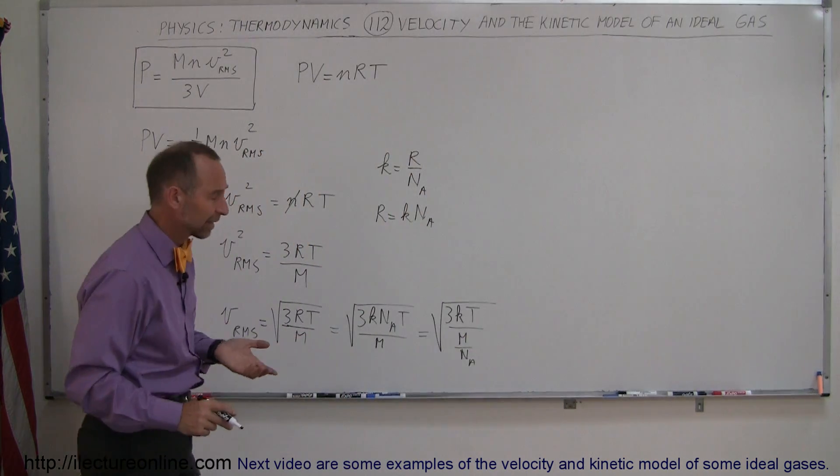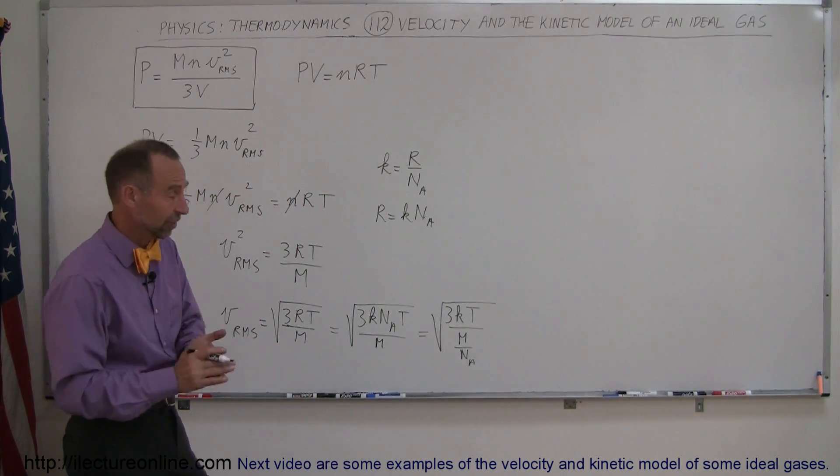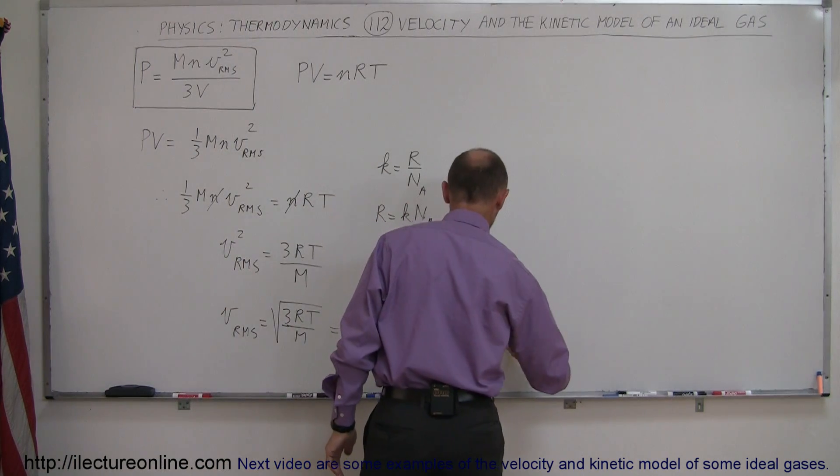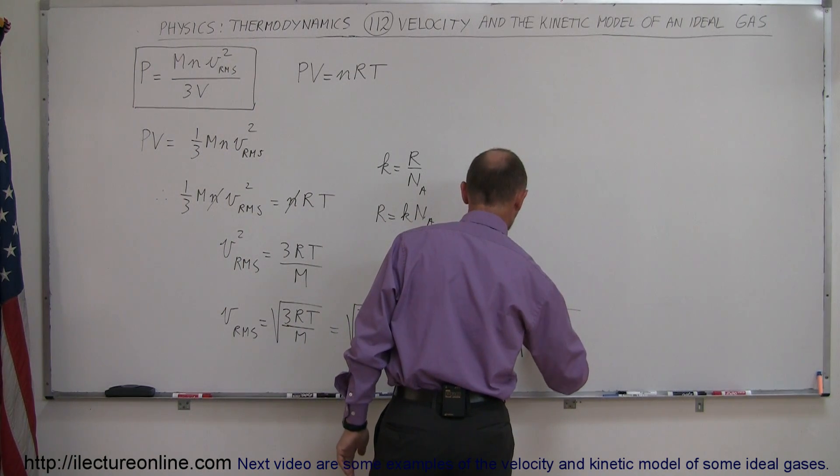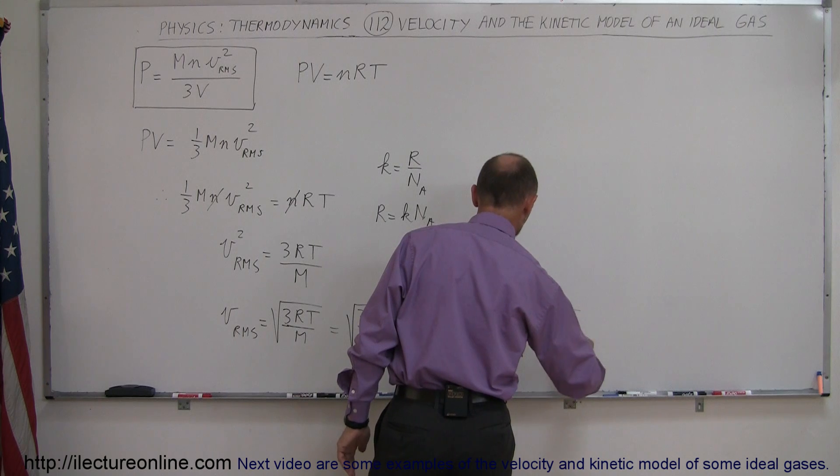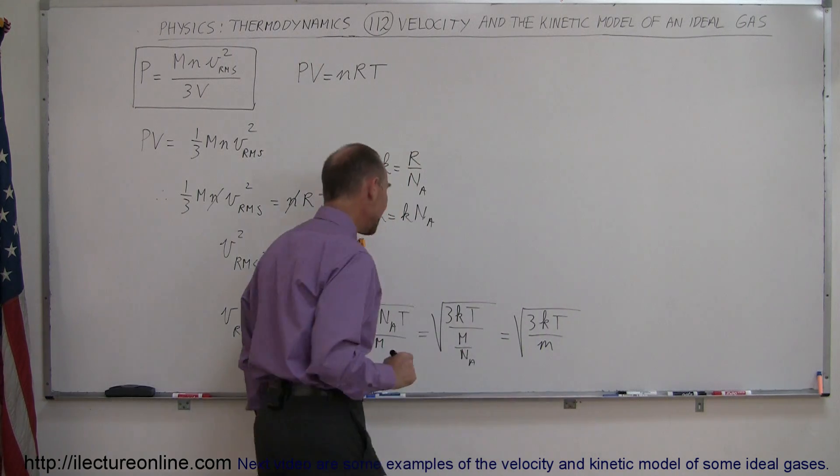And of course the molar mass divided by Avogadro's number is the mass of a single molecule. So this equation can also be written in terms of a mass of a single molecule. And so we have 3KT over M.